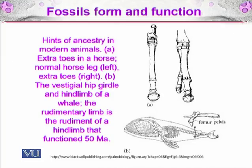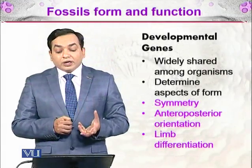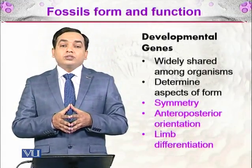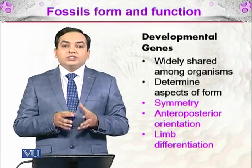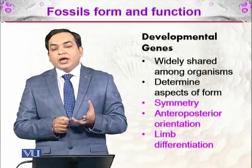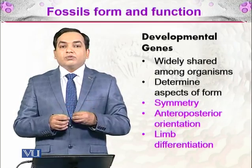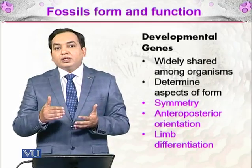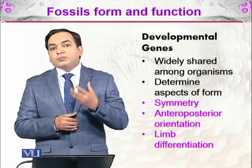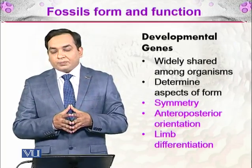Another example is the vestigial hip girdle and hind limb of the whale — the rudimentary limb is a remnant of the hind limb that functioned 50 million years ago. There are also developmental genes involved: these are genes present in an organism that are responsible for controlling the growth stages during development.